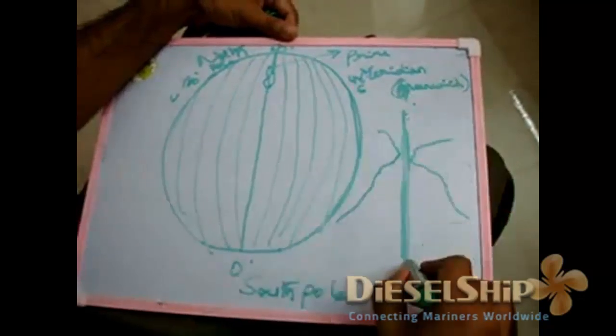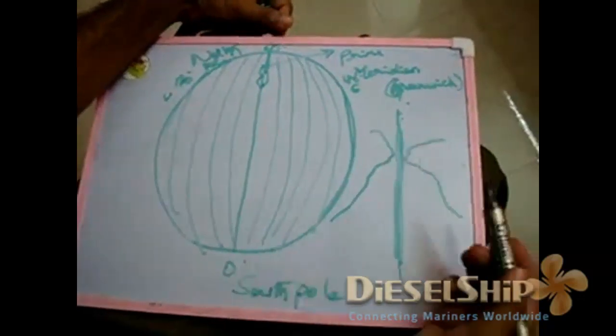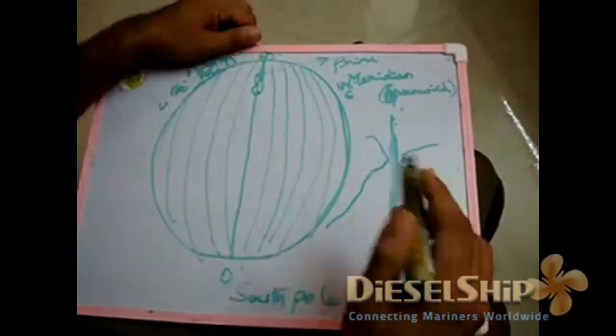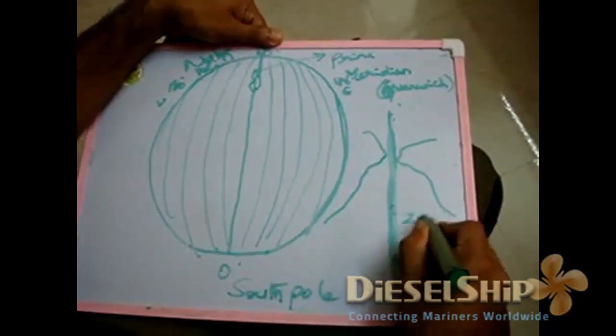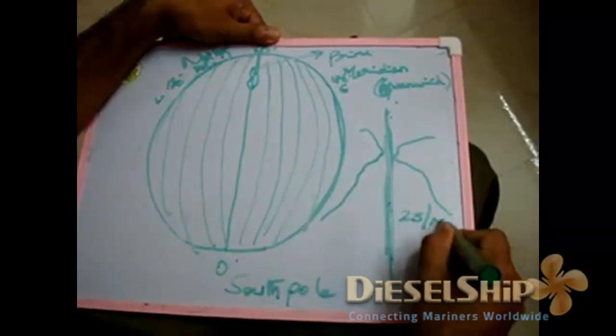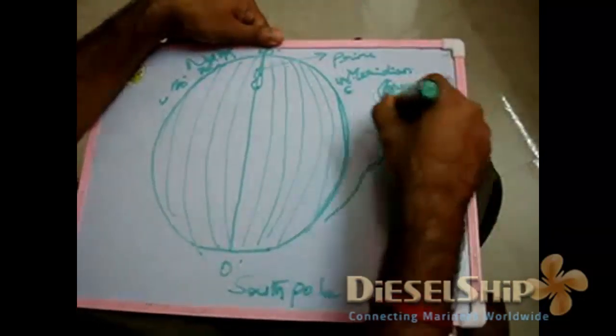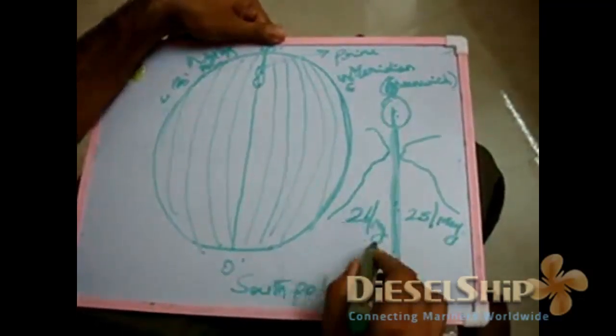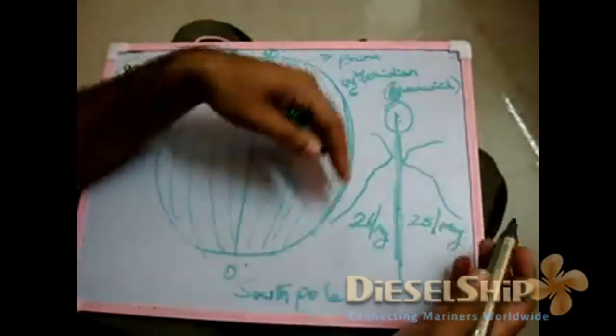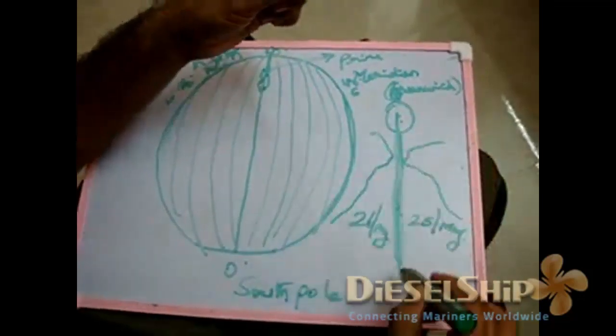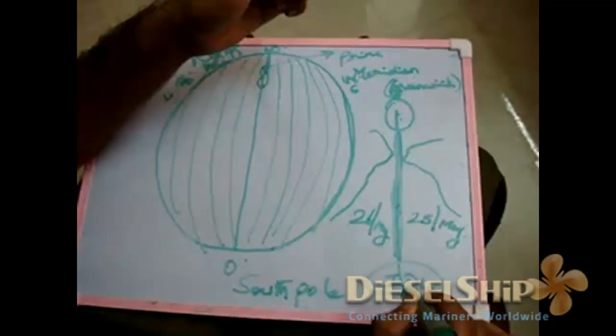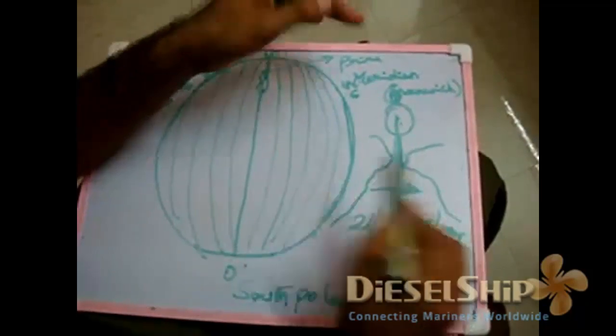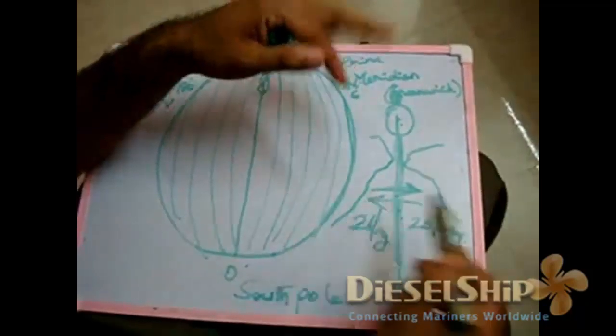And this is the international date line which separates where a new date arises, where the new day starts from this point. For example, you have 25th of May over here, and we have 26th of May starting from here. So there is a date difference. And I will explain that regarding the international date line in a separate video. How does a ship passes through international date line over here, adjust the dates and when they come back like this.